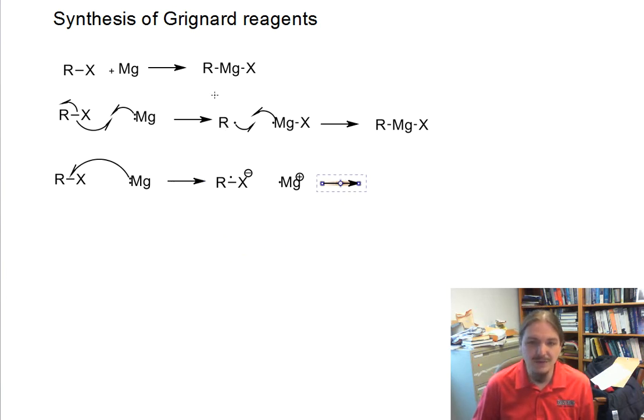Then this is followed by fragmentation and reorganization into the carbon radical. The halide anion gets together with the magnesium.